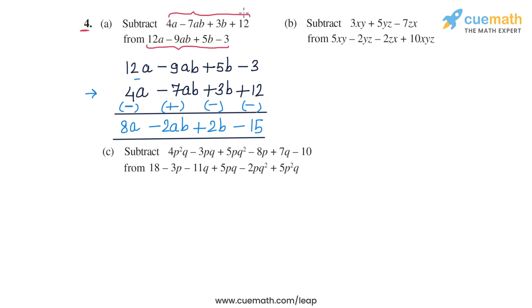So the result in part a is the expression 8a minus 2ab plus 2b minus 15. This is the answer for part a.